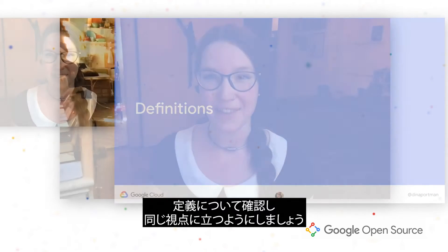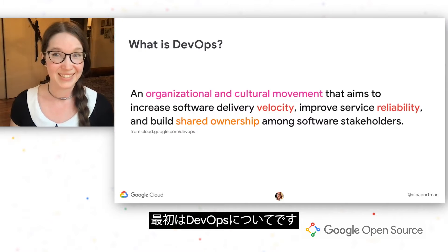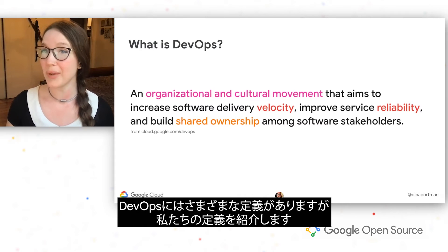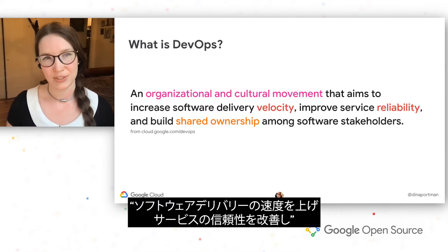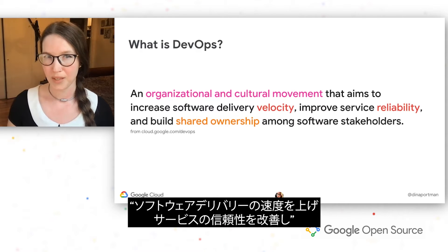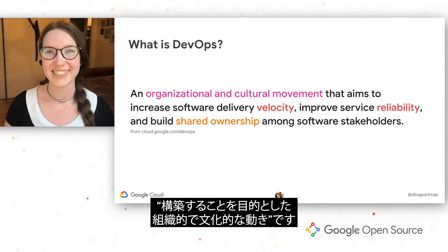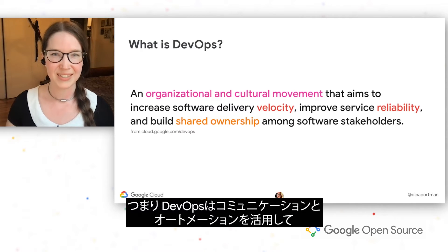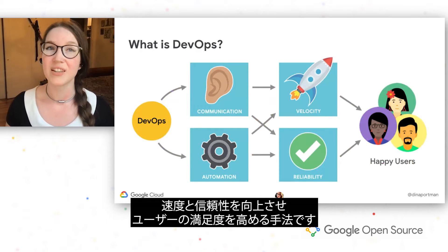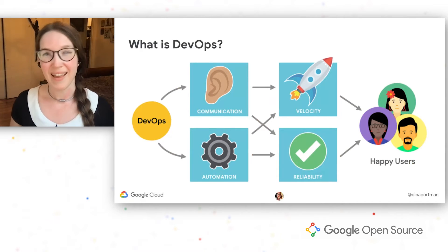To get started, let's start with definitions so that we are all on the same page. What is DevOps? There are a lot of different definitions of DevOps, but the one that we are going to be using is an organizational and cultural movement that aims to increase software delivery velocity, improve service reliability, and build shared ownership among software stakeholders. In other words, DevOps is a way of using communication and automation to increase velocity and reliability to make users happy.